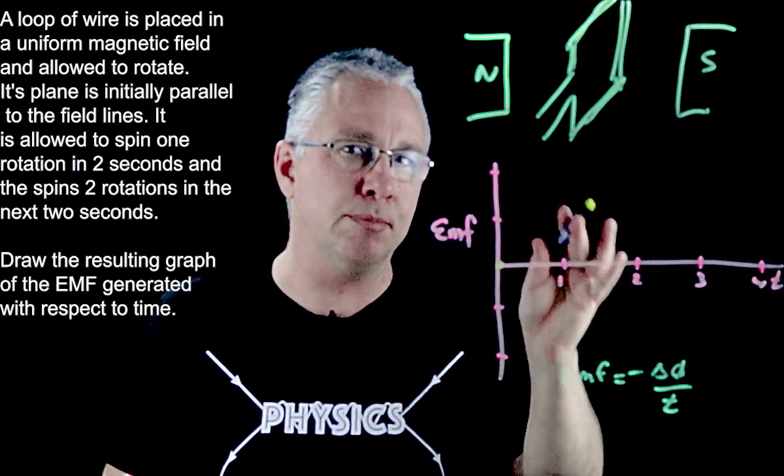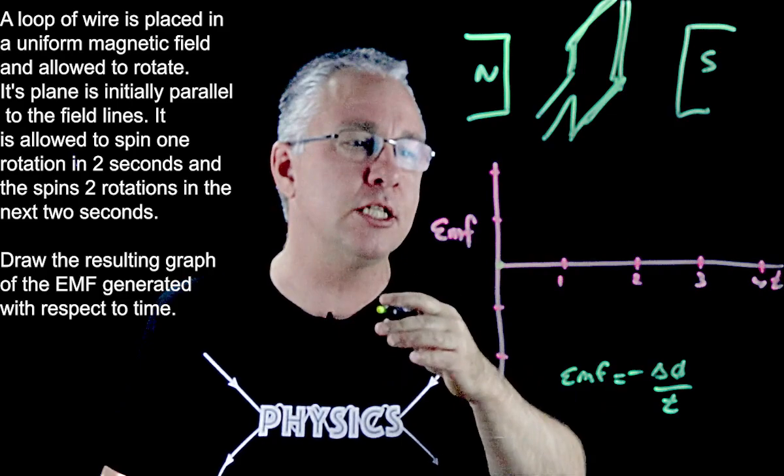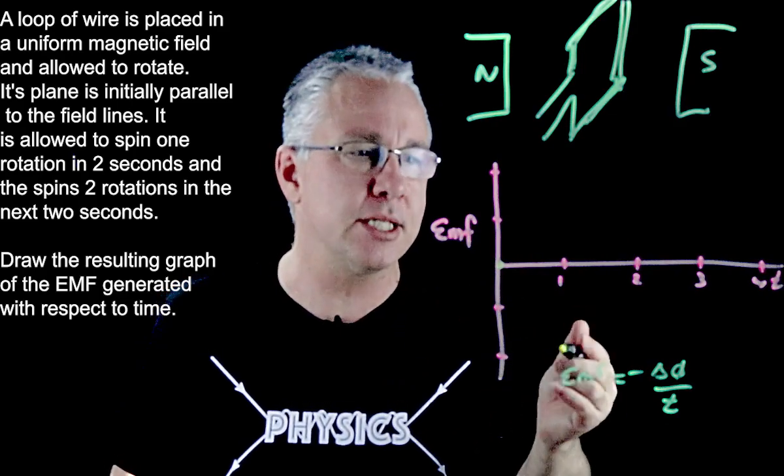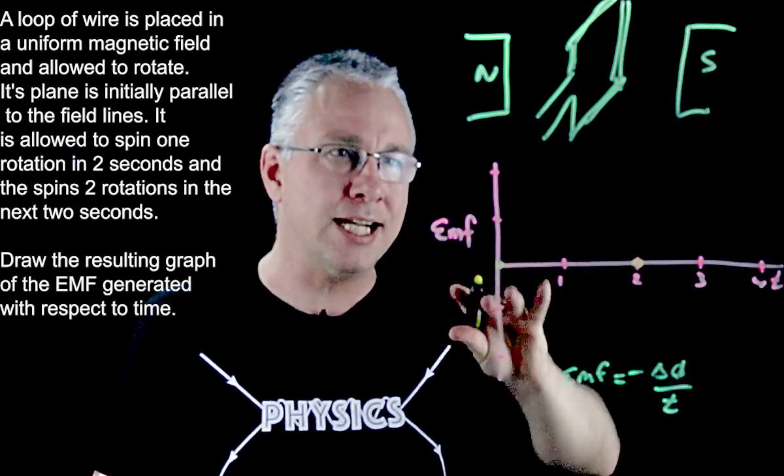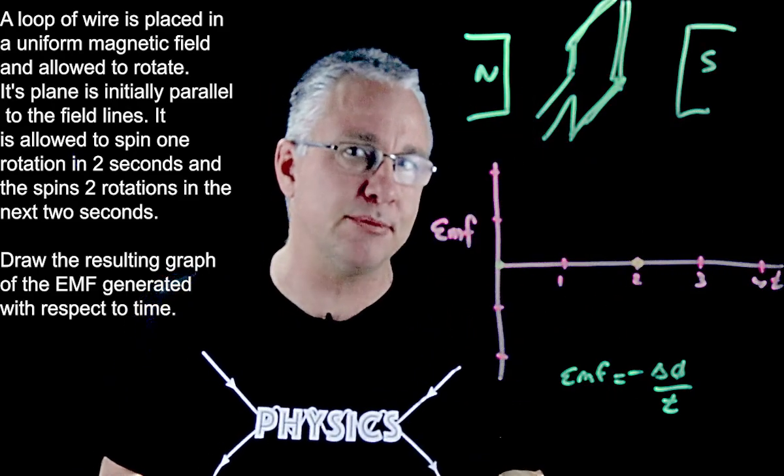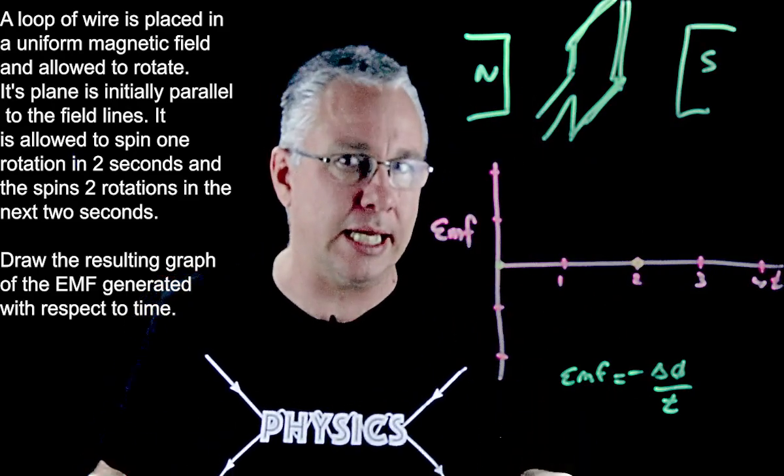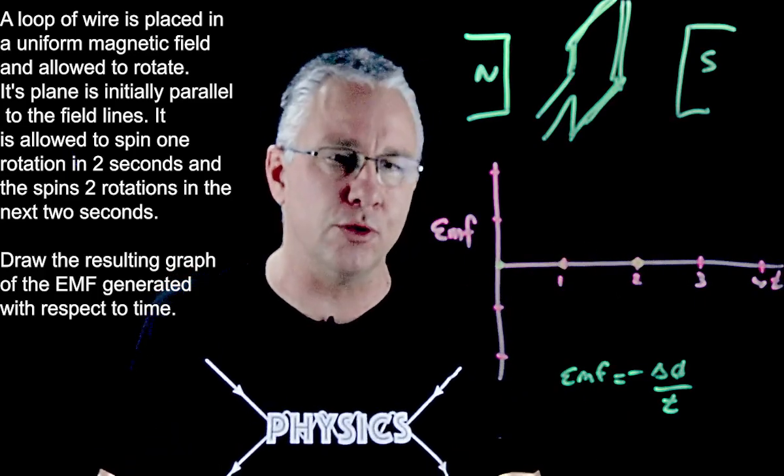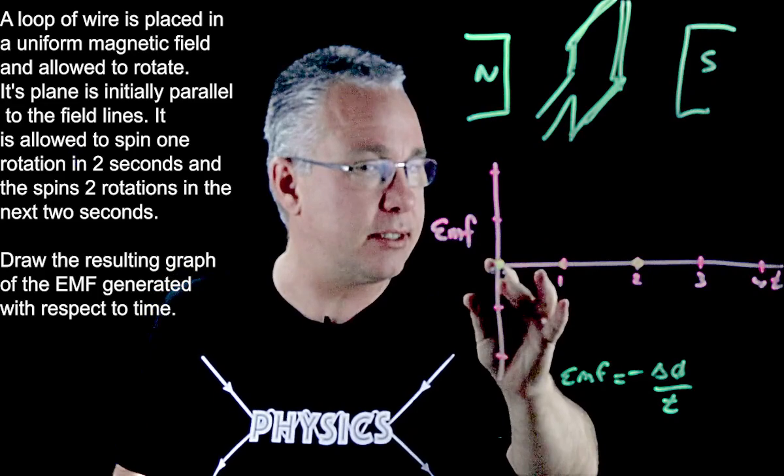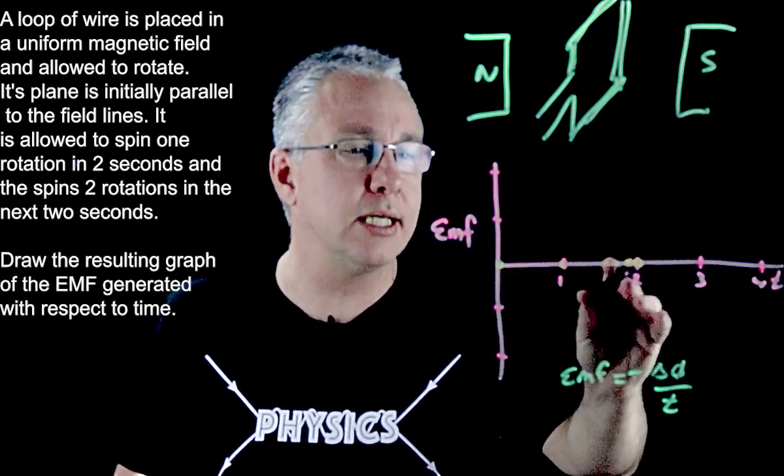Now obviously after it does one complete loop then it's going to be again zero by the time it gets to after two seconds. So that is my value there. The fact is that at 180 degrees I have maximum flux as well. Again the rate of change of flux is zero in this case so all of these are true. I'm going to have zero EMF at zero seconds, one second and two seconds.